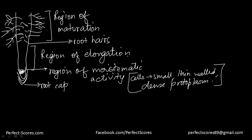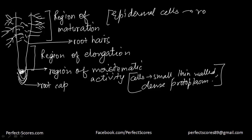The cells just next to the meristematic region undergo elongation — that is why it is known as the region of elongation. The cells there differentiate and mature, and next to this is the region of maturation. From the region of maturation, some of the epidermal cells form root hairs, whose basic function is to absorb water and nutrients from the surrounding soil. That is about the regions of the root.